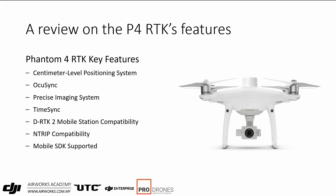It also allows you to link more than one drone to the remote. You have a precise imaging system — a combination of calibration and camera characteristics. You have TimeSync, which involves synchronization of the picture-snapping time with GPS time. DRTK2 mobile station compatibility was new at the time; the DRTK2 was launched initially to work with the Phantom 4 RTK. With it also came Ntrip compatibility, so you could link to an existing correction network, and Mobile SDK support.